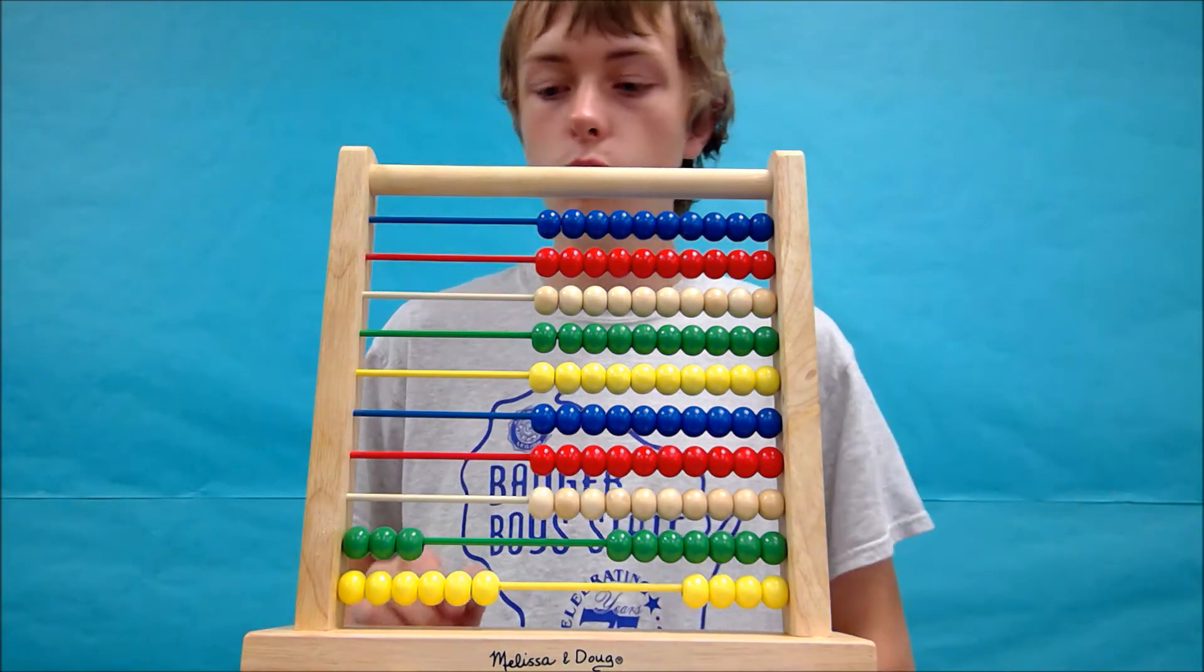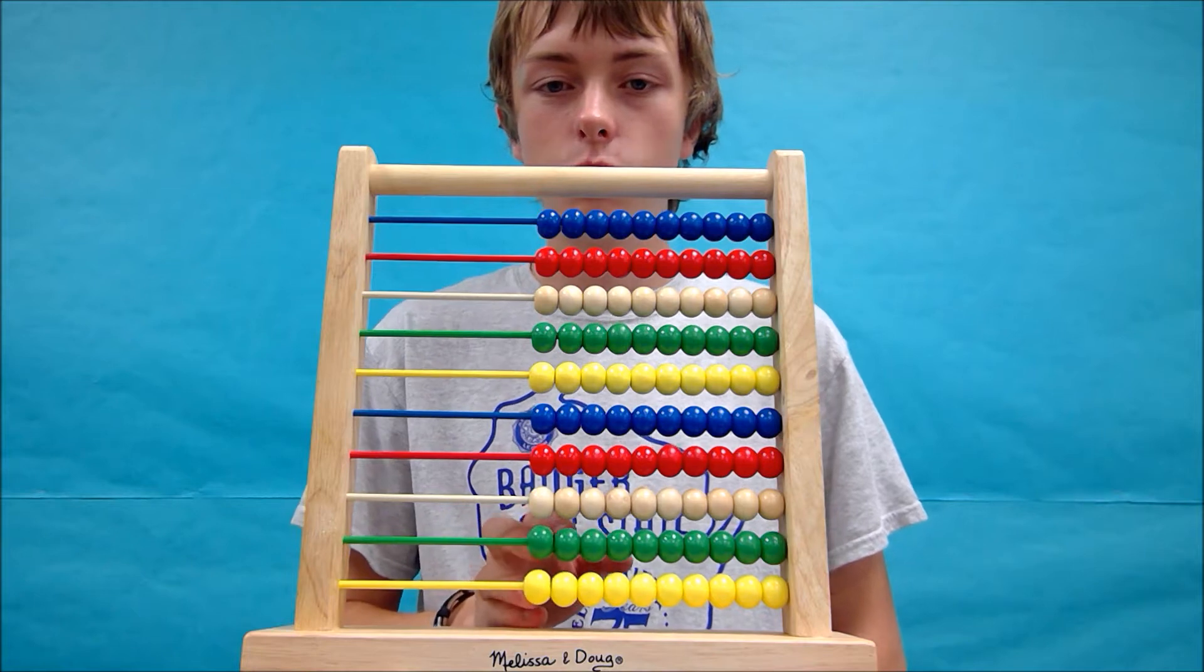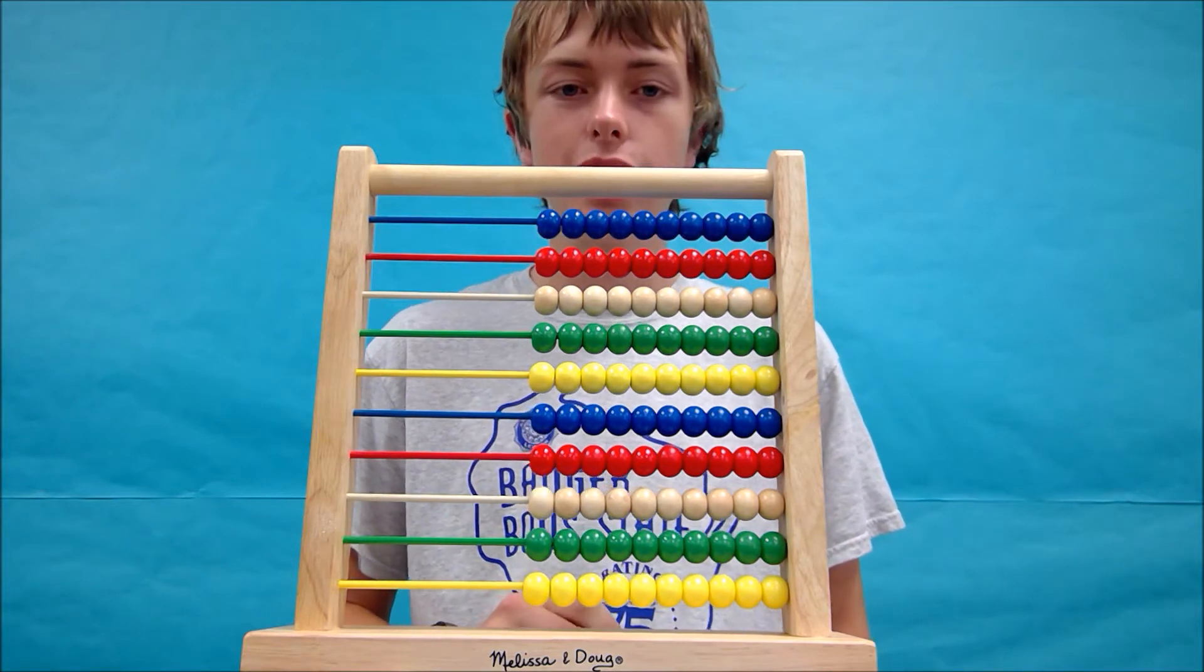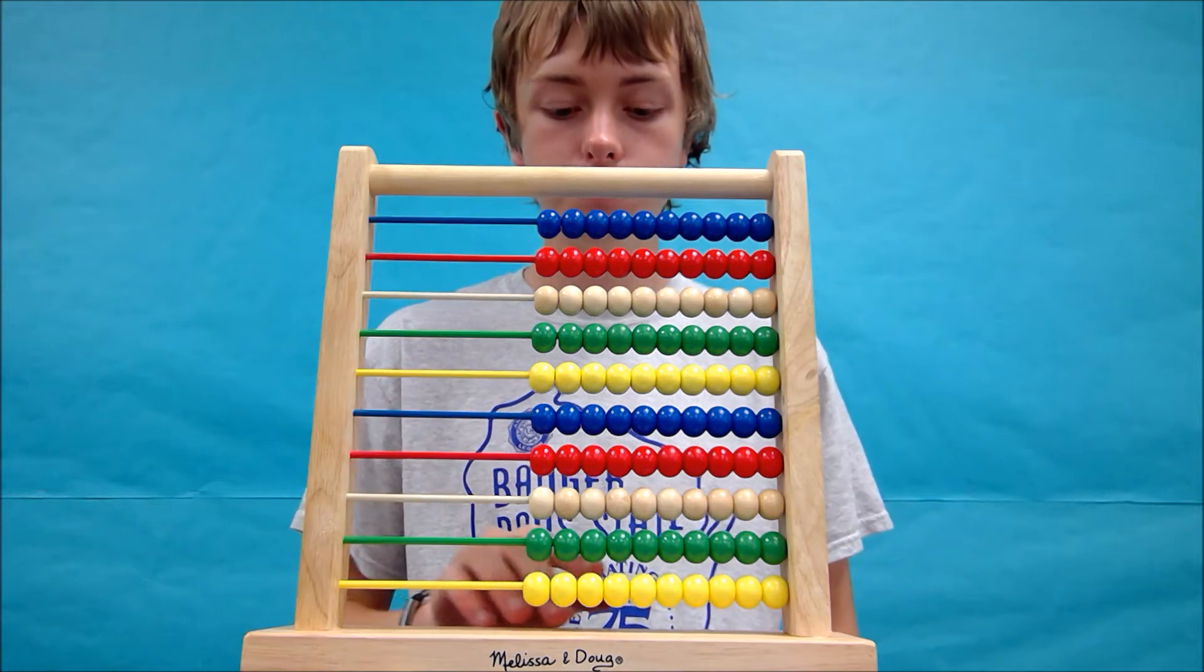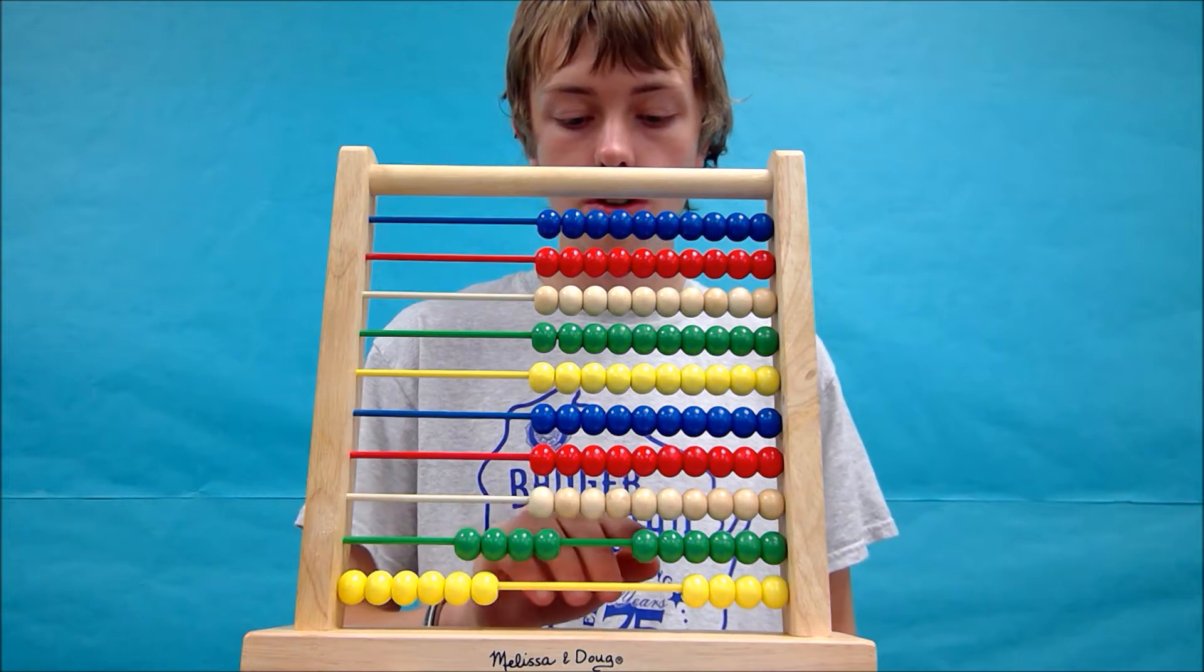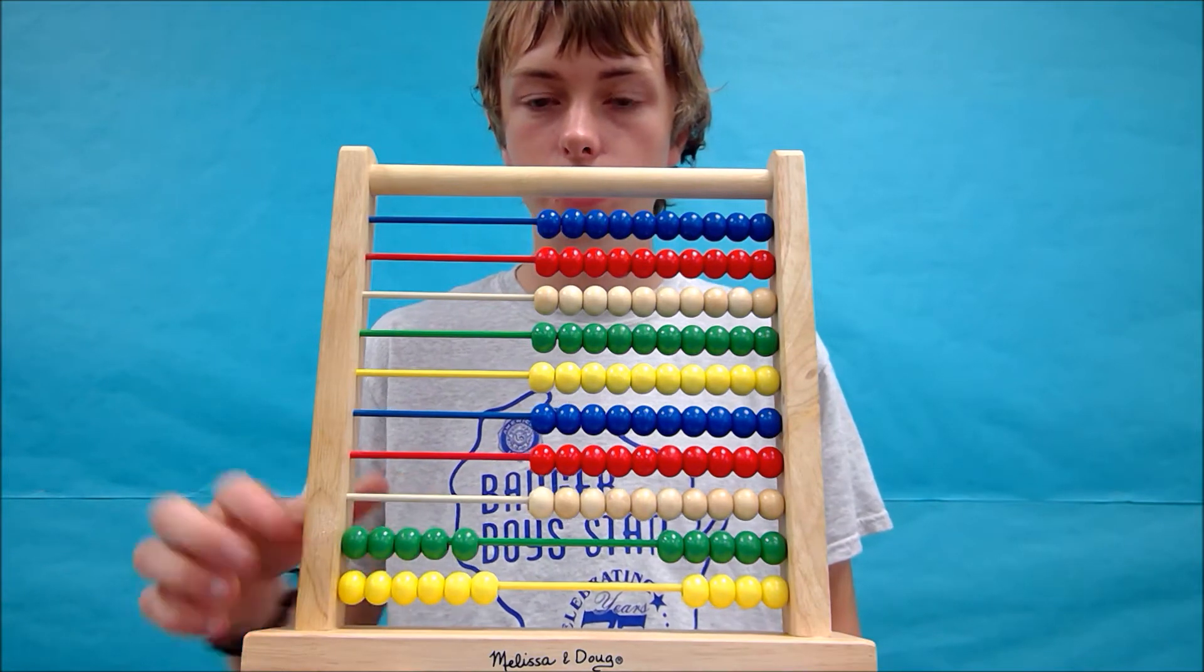All right, so that one wasn't too tricky. We'll try another one. We're going to try 56 plus 37. Again, we'll start by forming the first number. Two, four, six. Two, four, five, 56.